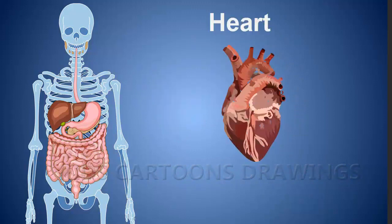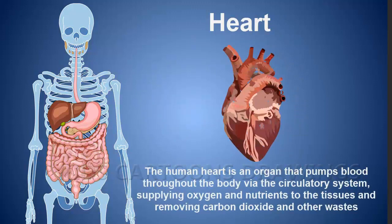Heart: The human heart is an organ that pumps blood throughout the body via the circulatory system, supplying oxygen and nutrition to the tissues and removing carbon dioxide and other wastes.